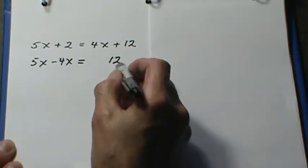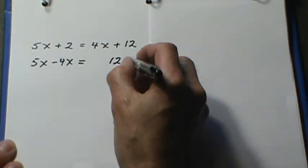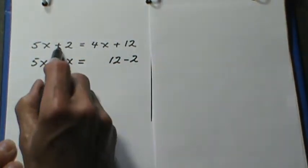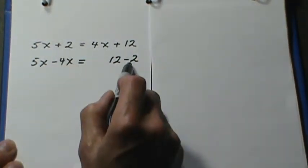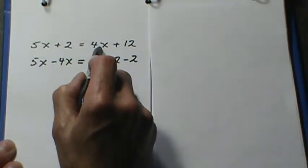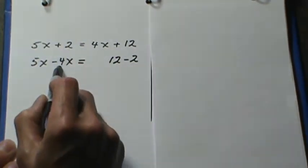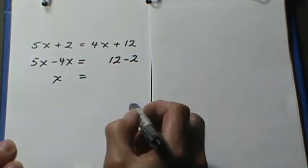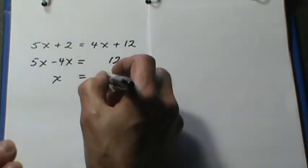Now you can write minus 2 plus 12 or you can write 12 minus 2. It doesn't matter the order as long as the plus 2 on this side becomes minus 2 and the 4x becomes the minus 4x. And when you subtract 4x from 5x, you get 1x. 2 from 12 is 10.